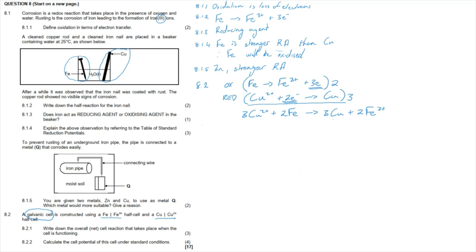Question 8.2.2: Calculate the cell potential under standard conditions using the formula from the formula sheet: E°cell = E°(reduction half-cell) − E°(oxidation half-cell). The reduction half-cell is copper at +0.34 V, and the oxidation half-cell is iron at −0.06 V. Therefore, E°cell = 0.34 − (−0.06) = 0.40 V.